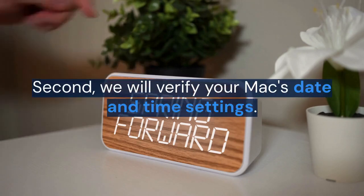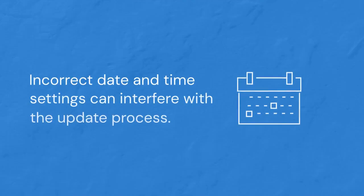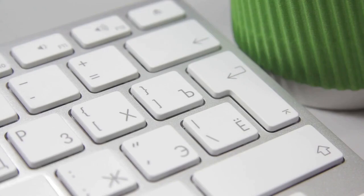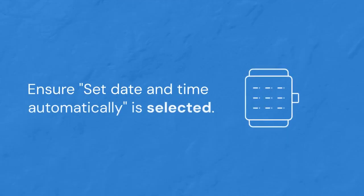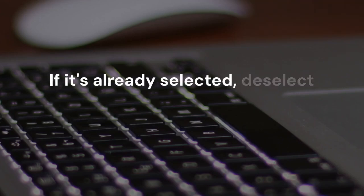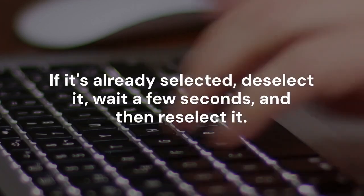Second, we will verify your Mac's date and time settings. Incorrect date and time settings can interfere with the update process. Go to System Preferences, then Date and Time. Ensure 'Set Date and Time automatically' is selected. If it's already selected, deselect it, wait a few seconds, and then reselect it.